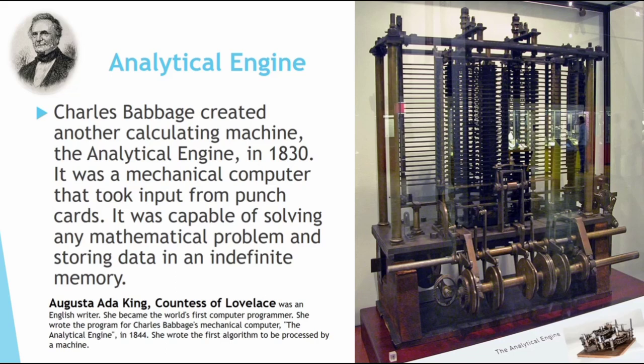Augusta Ada King, Countess of Lovelace, was an English writer who became the first computer programmer in the world. She wrote the program for Charles Babbage's mechanical computer, the Analytic Engine. In 1844, she wrote the first algorithm to be processed by a machine.